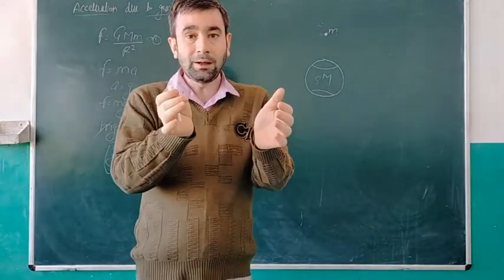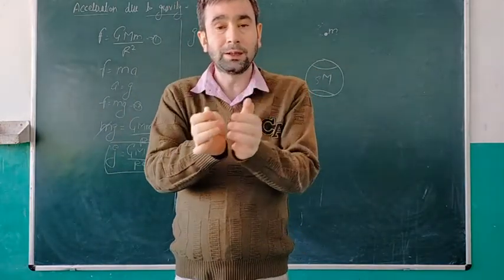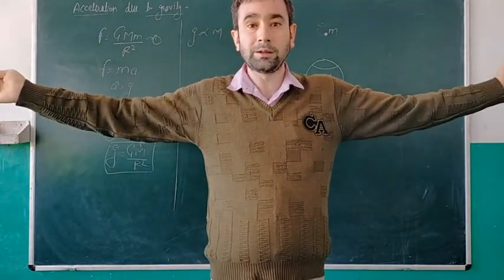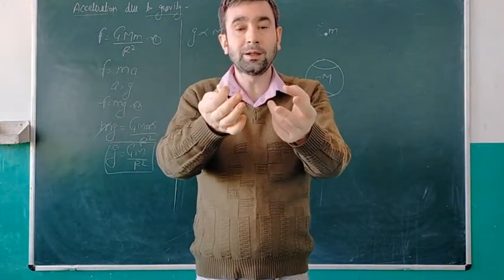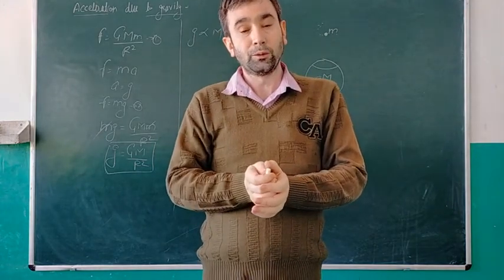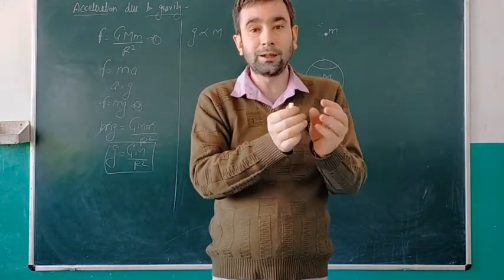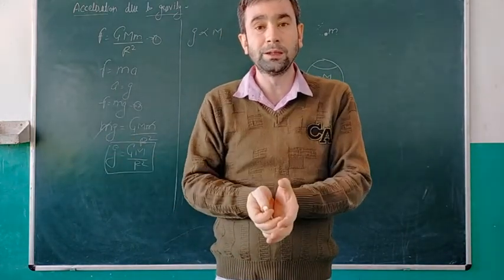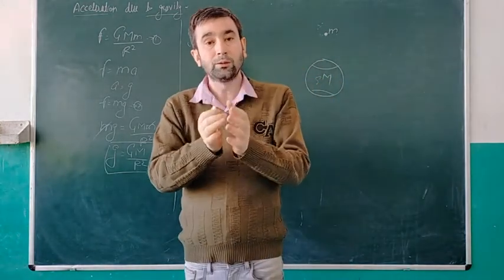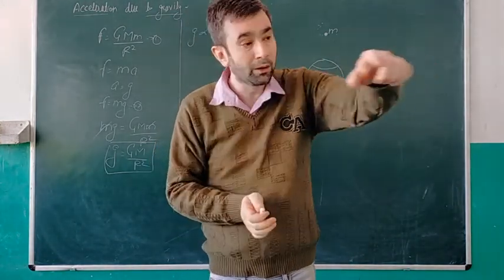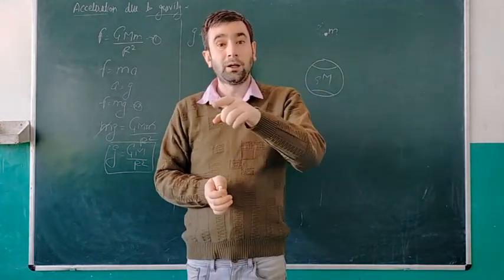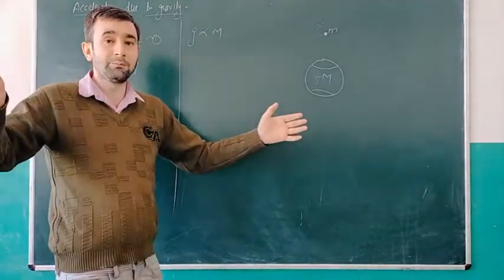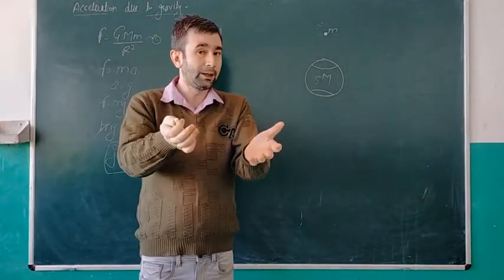For example, Earth has a certain mass, but the Sun is much larger. The mass of the Sun is very high. So the gravitational force of the Sun is much stronger than Earth's gravitational force. That's why all the planets revolve around the Sun. This is due to the large mass. The larger the mass, the stronger the gravitational force.